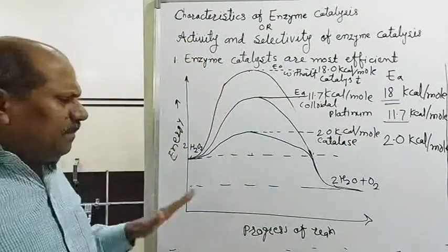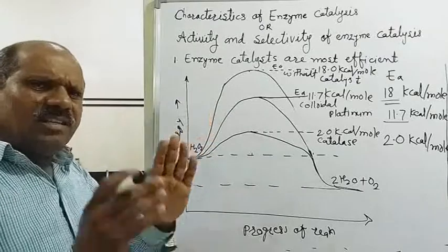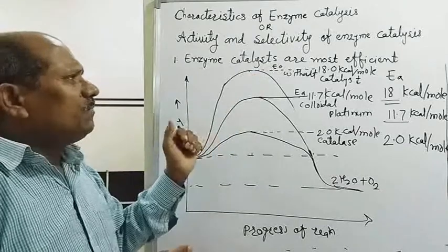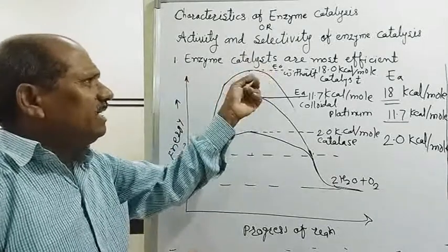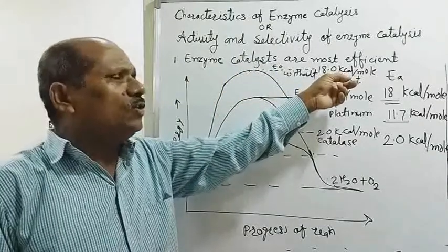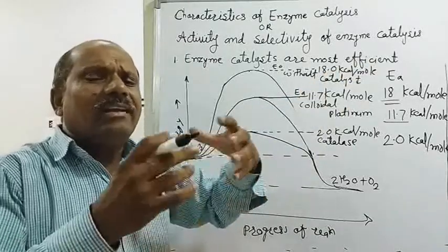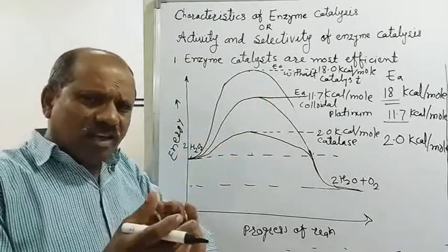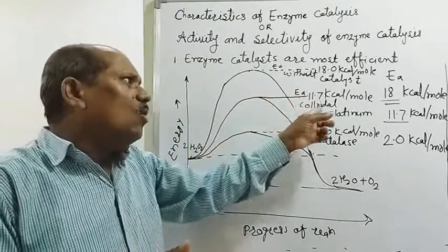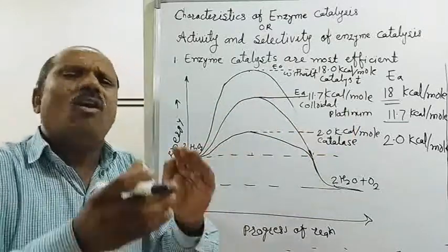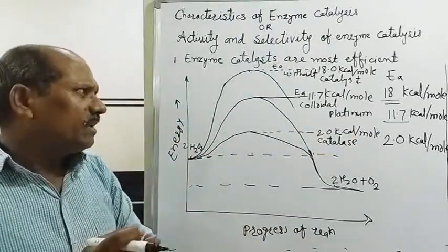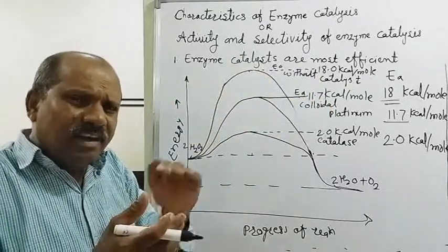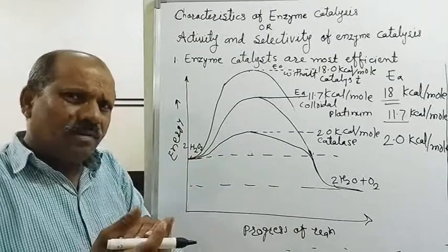From this diagram it is clear that without catalyst, the activation energy required is 18 kilocalories per mole. Using inorganic catalyst colloidal platinum reduces it to 11.7 kilocalories per mole. Using an enzyme as catalyst reduces it further to only 2 kilocalories per mole, meaning the reaction can proceed at minimum activation energy, and hence the rate of reaction increases.